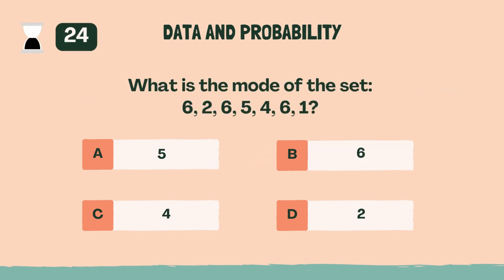What is the mode of the set? 6, 2, 6, 5, 4, 6, 1. B, six.